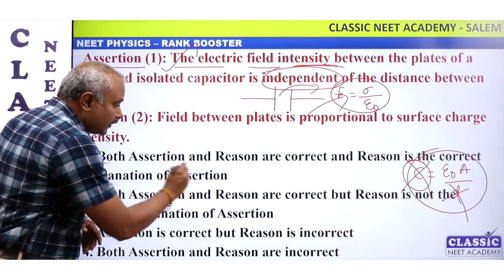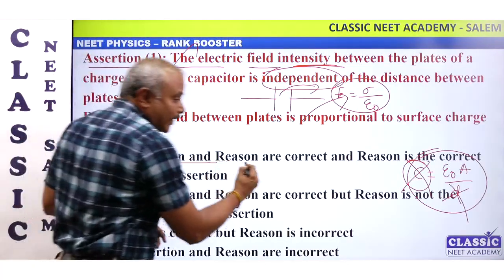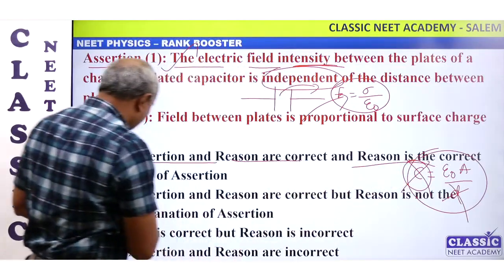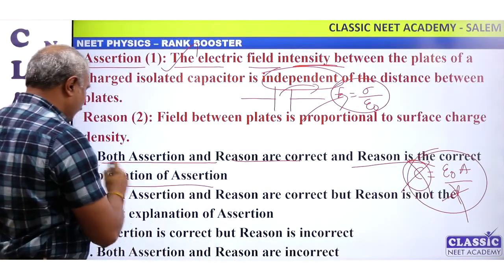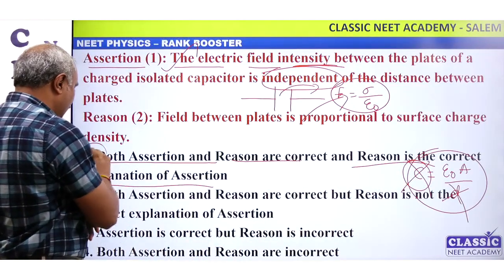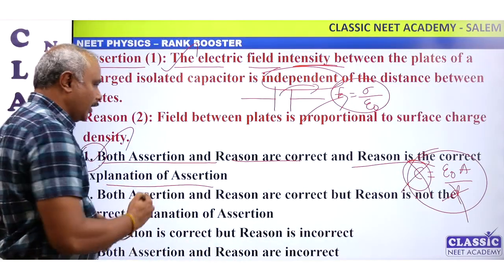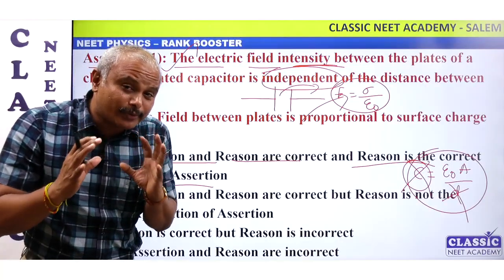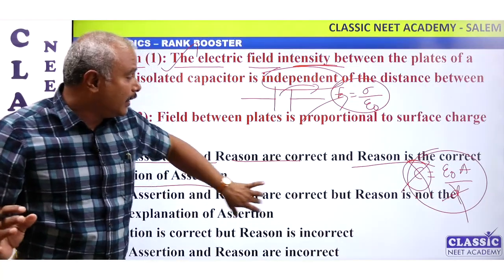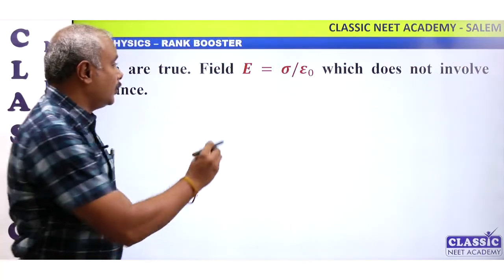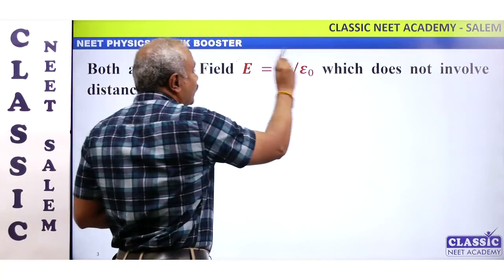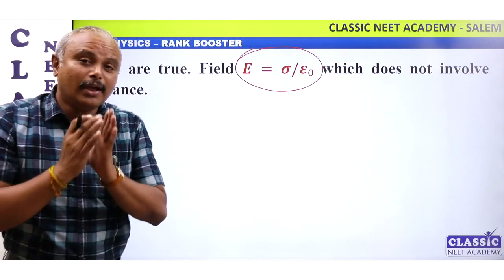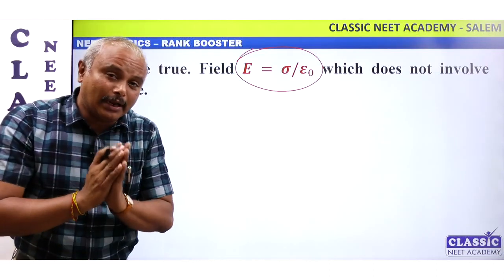Both the Assertion and Reason are correct, and the Reason is the correct explanation for the Assertion. That is the correct option. So you should know the concept very well. If you say E is equal to sigma by epsilon, then we can solve it.